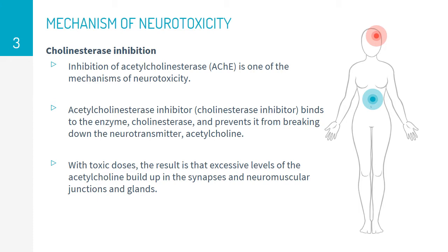Acetylcholinesterase inhibitor, also known as cholinesterase inhibitor, binds to the enzyme cholinesterase and prevents it from breaking down the neurotransmitter acetylcholine. With toxic doses, the result is that excessive levels of acetylcholine build up in the synapses, neuromuscular junctions, and glands. This leads to neurotoxicity.